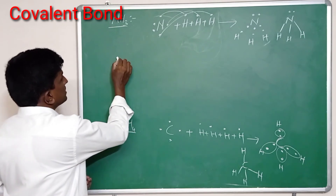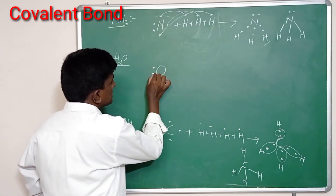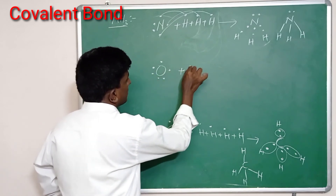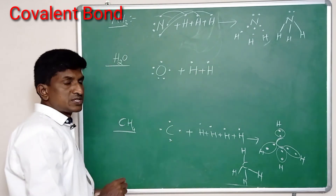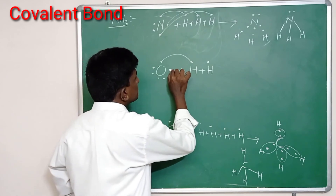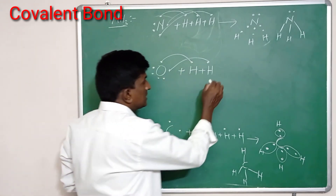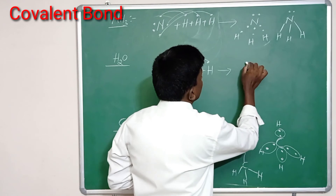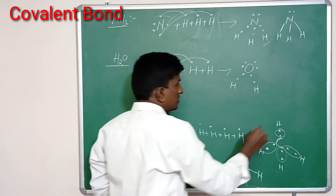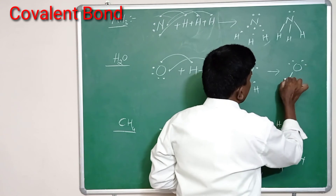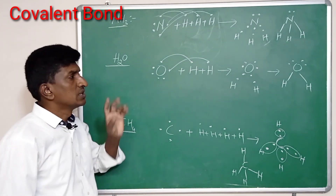Then let us discuss the formation of the water molecule. Oxygen has six electrons in its outermost orbit, and two hydrogens each have a single electron in their first orbit. Oxygen contributes two electrons and the two hydrogens also contribute two electrons. Two covalent bonds are formed between oxygen and hydrogen, and in this way the water molecule is formed.